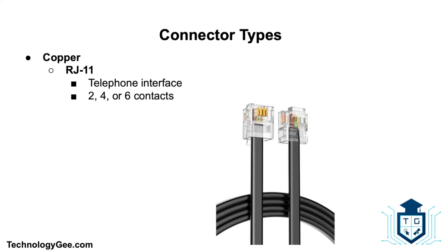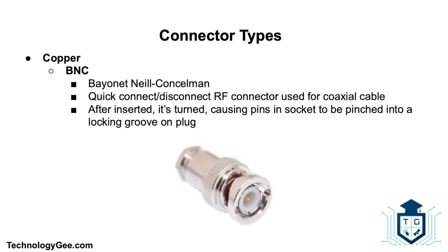The RJ11 is the telephone interface that uses a cable of twisted wire pairs and a modular jack with two, four, or six contacts. RJ11 is the most common connector for plugging a telephone into the wall and the handset into the telephone.